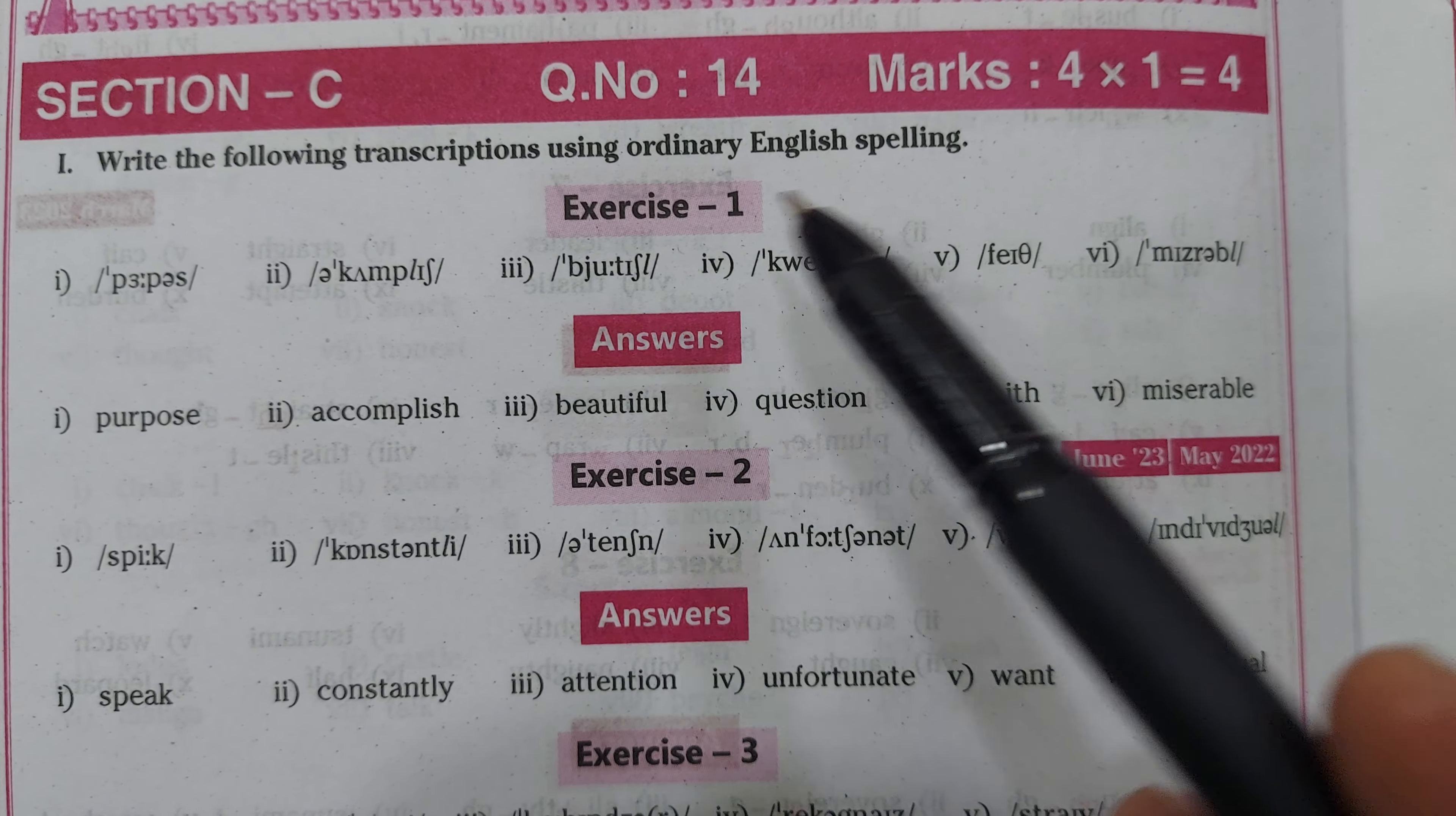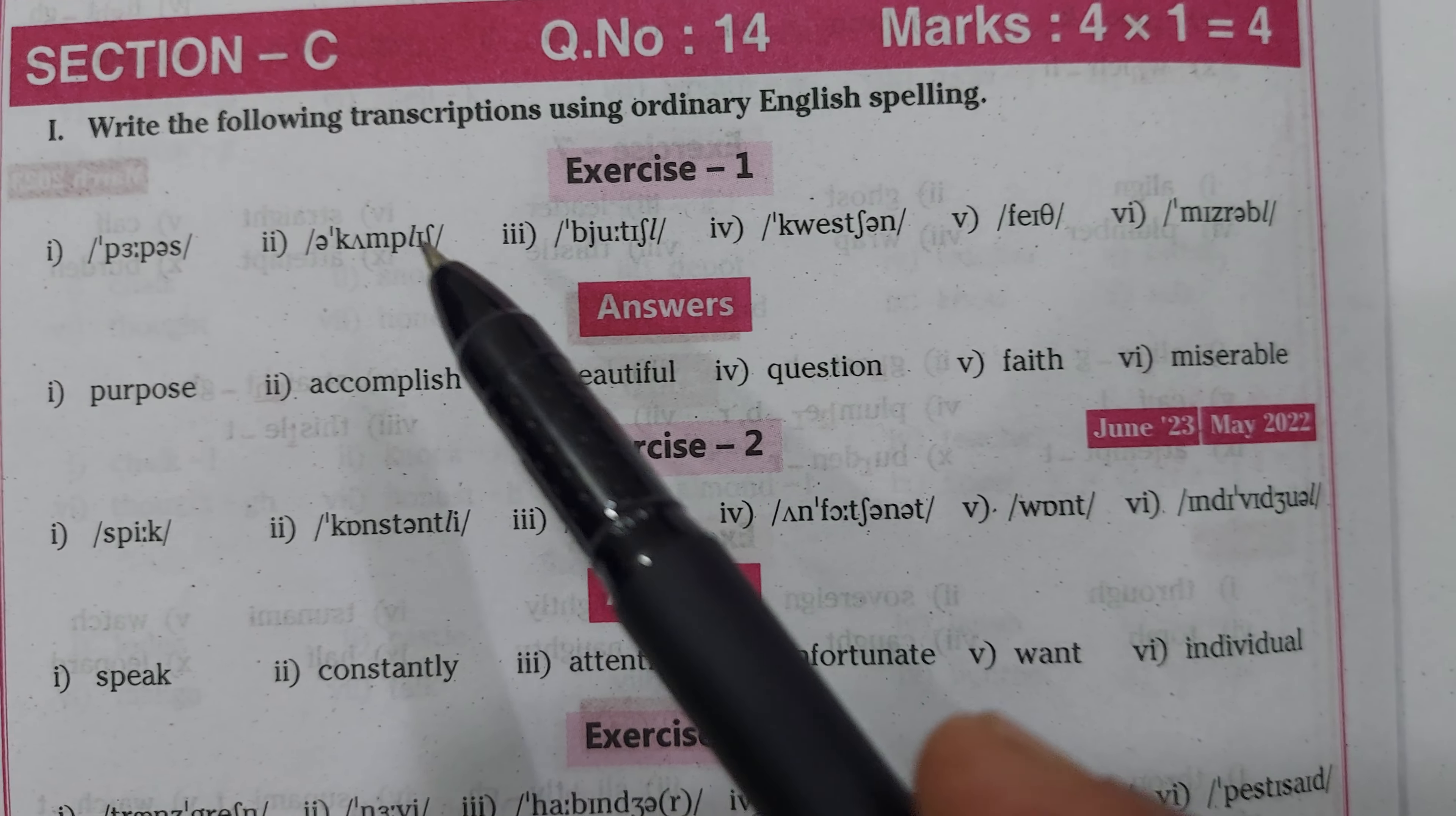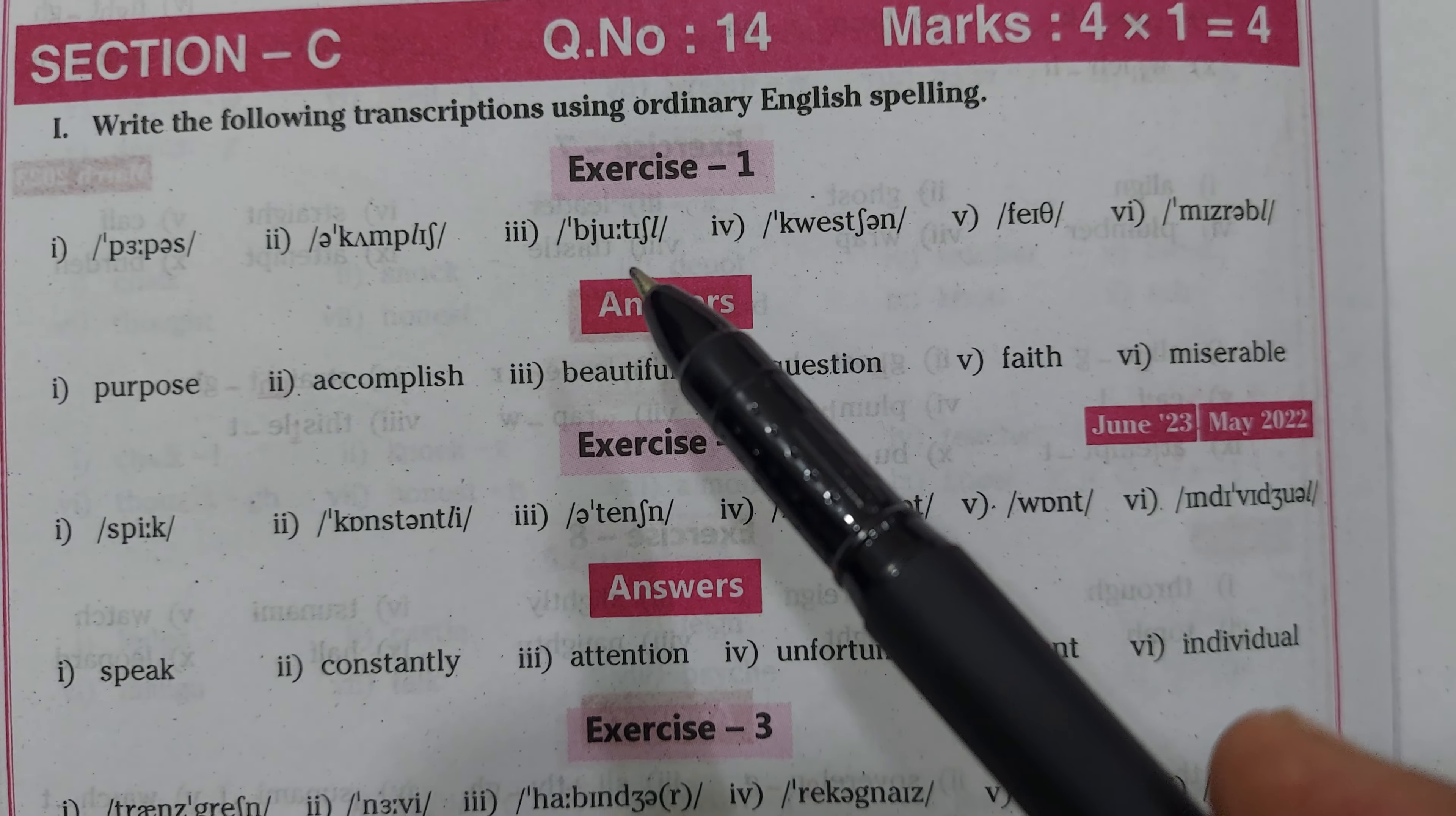Now write the following transcriptions using ordinary English spelling. Okay, so this one is purpose, this one is accomplished. You have to decode it: beautiful, question, faith, miserable.